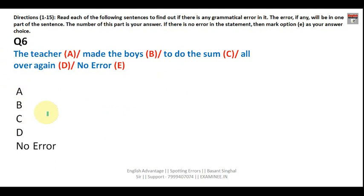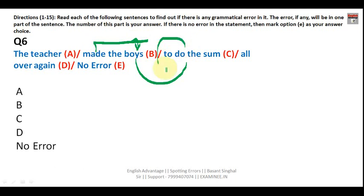Question six: 'The teacher made the boys to do the sum all over again.' The verbs 'make,' 'let,' and 'bid' are causative verbs not followed by 'to + infinitive' but by the bare infinitive. So 'made' is followed by object and bare infinitive. In place of 'to do the sum,' you write 'do the sum.' The correct sentence is: 'The teacher made the boys do the sum.' Your answer is C.